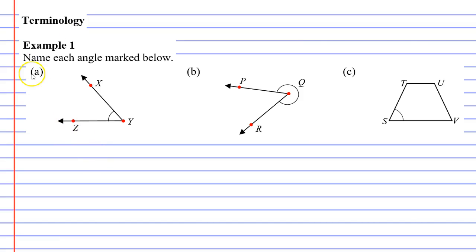If I was to name it, I would use the angle terminology, which is kind of like a leaning over L. This means angle. And I can write it as angle XYZ, or I can write it as angle ZYX. Remembering that what is important is that the vertex is in the middle.